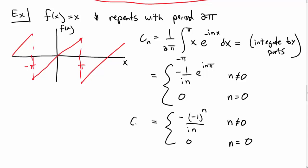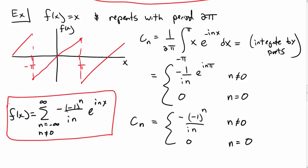And so I get the c_n's that I actually wrote at the beginning of the video. So my Fourier series, my complex Fourier series for f(x), is a sum from n from negative infinity to infinity, but not including 0, of -(-1)^n/(in) e^(inx). And so this is a complex Fourier series of this function.